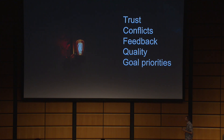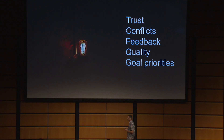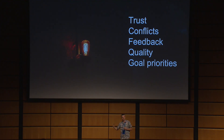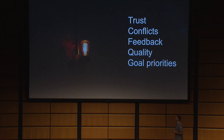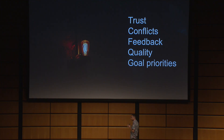The last thing, and I think it's really hard to achieve, but it's the top metric for the cohesive team: goal priorities. By goal priorities, I mean setting the team goal above your personal goals. The team goal is more important.